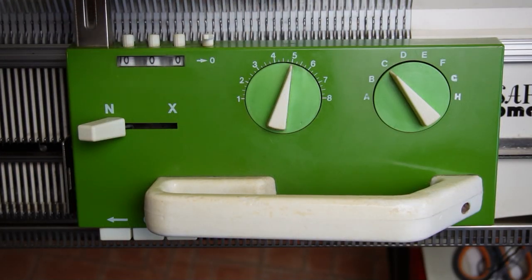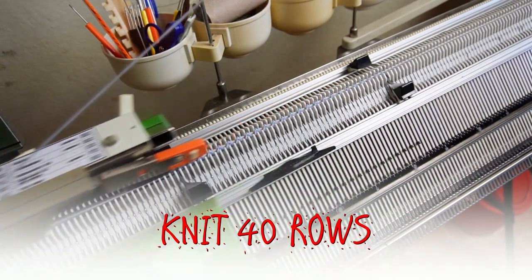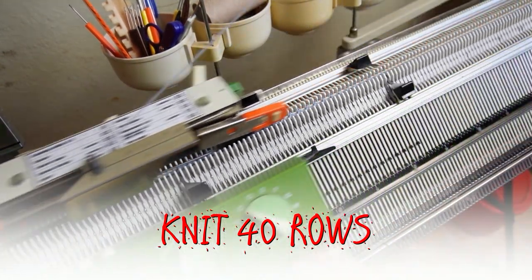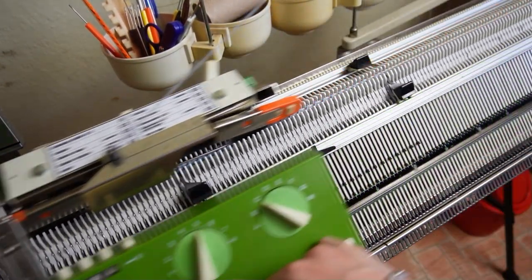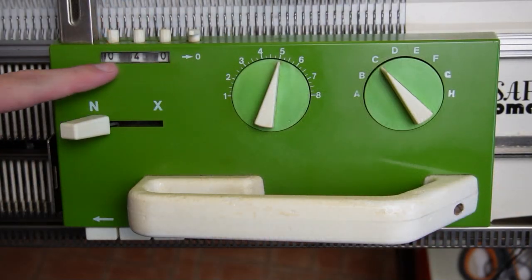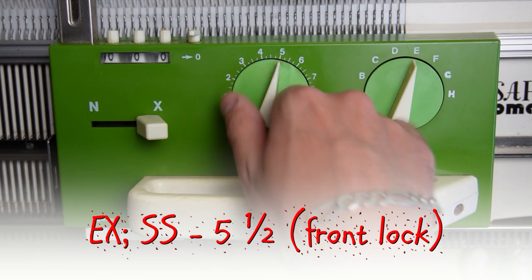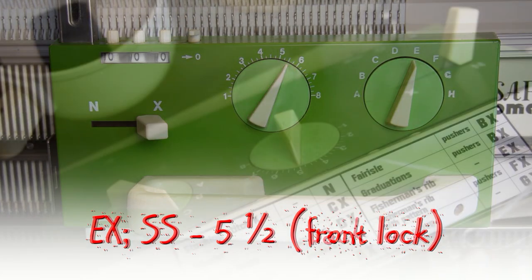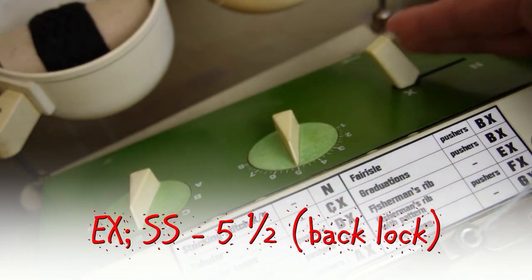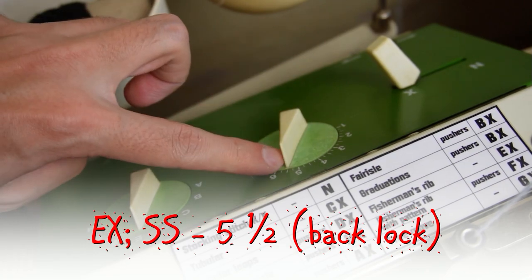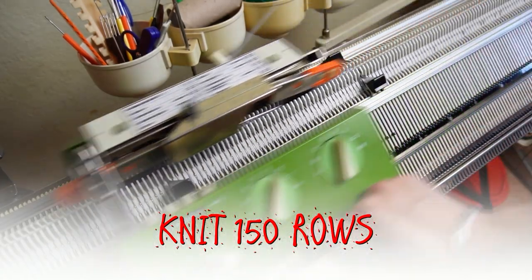Clear the row counter and knit 40 rows. Clear the row counter again, then set both locks to EX and increase the stitch size to 5.5. Now knit 150 rows.